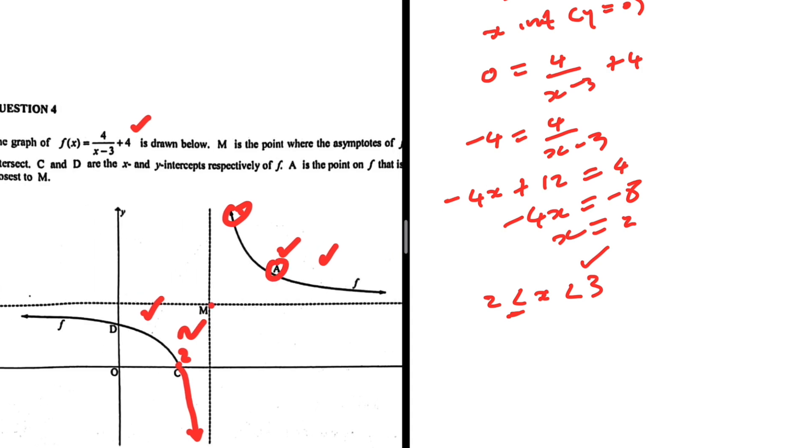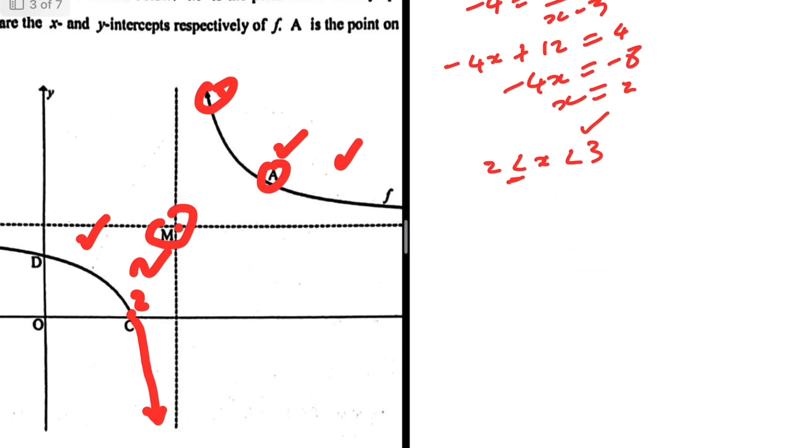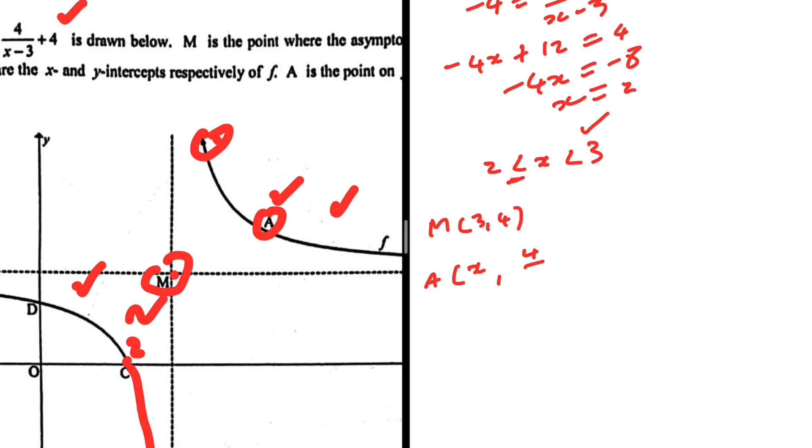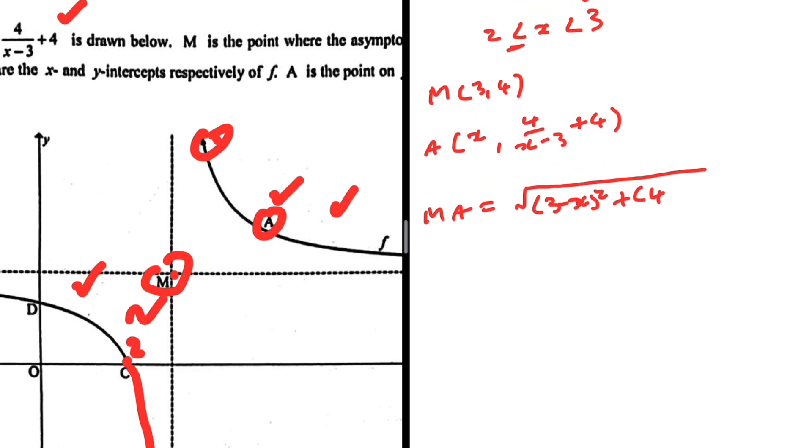Okay, M, A and M, there's something going on there. A is the point that is closest to M. And we want the coordinates of A. So let's see. The coordinates of A, M has coordinates 3, 4. And A is the point that we have 4 over x minus 3 plus 4. So MA equals, well, the square root of (3 minus x) squared plus (4 minus 4 over x minus 3 plus 4) squared.